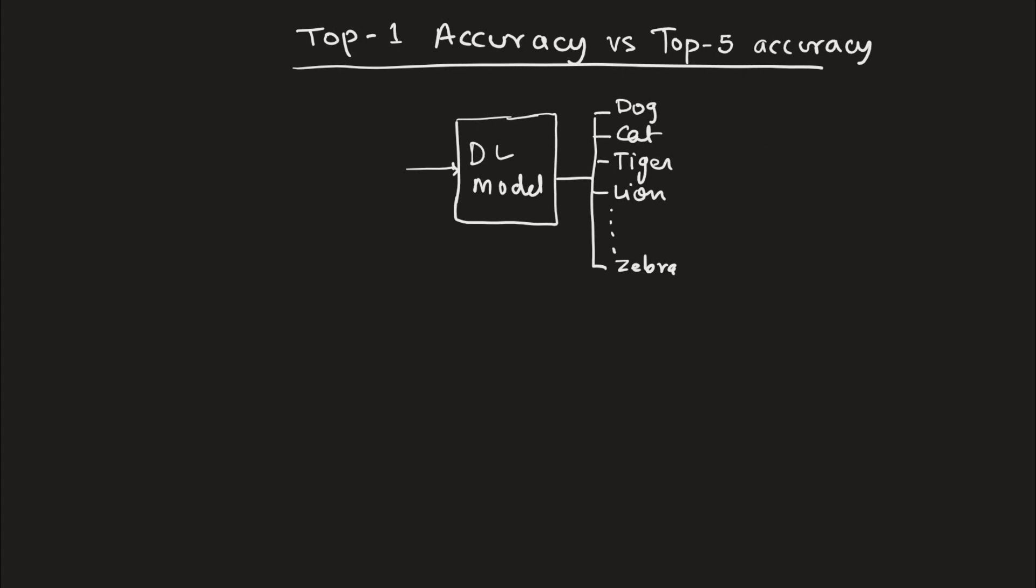So let's suppose that we provide this deep learning model, the trained deep learning model, with the image of a cat. So this deep learning model is now going to predict the probability that the image belongs to one of these 10 classes.